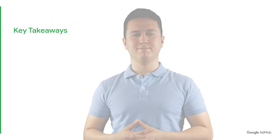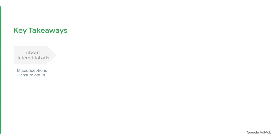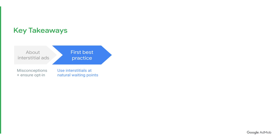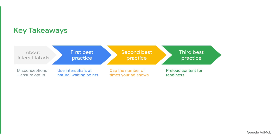For the optimal interstitial ads experience, here are the key takeaways. Don't be misled by misconceptions such as interstitial ads being a disruptive ad format. Also, ensure that you are opted into all ad types so as not to compromise your revenue. First best practice: use interstitials at natural transition or waiting points within your app. Second best practice: engage in frequency capping to prevent saturation. Third best practice: preload content for readiness so there is no lag time. Last best practice: follow the interstitial ads policy reminder to prevent serving ads outside of your app environment.